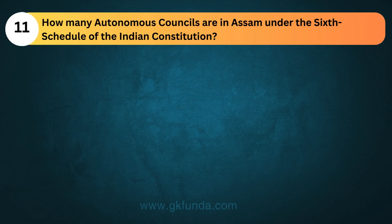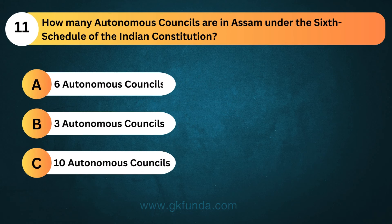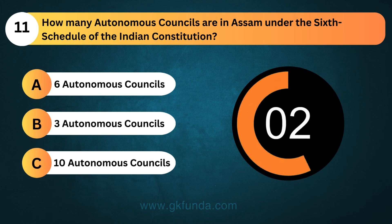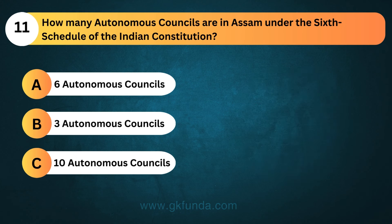How many autonomous councils are in Assam under the Sixth Schedule of the Indian Constitution? The answer is option B, three autonomous councils.